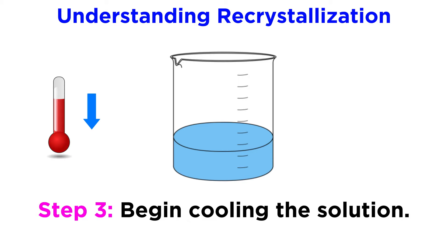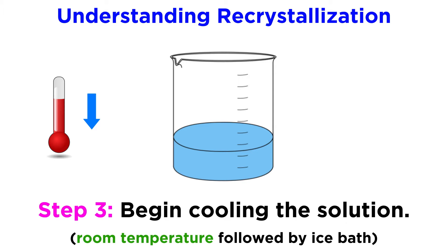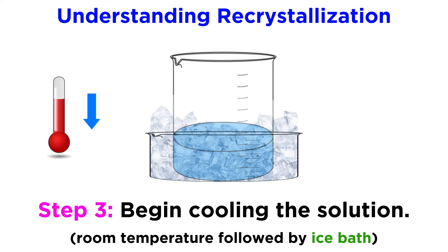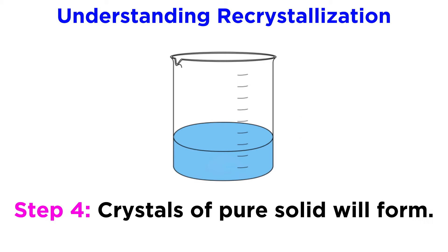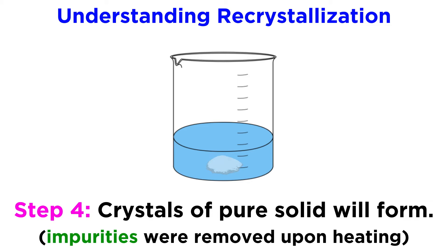Once dissolution is complete, we can then begin the cooling process. This will be done by first removing any heat source and allowing the beaker to come down to room temperature. Then the beaker can be placed in an ice bath, whereby the cooler surroundings will draw heat away from the contents of the beaker. Crystals should begin to form in the beaker, which will be a much purer version of the solid, with the impurities having been removed, and which now are extremely dilute in solution.